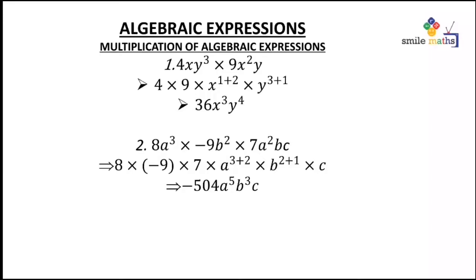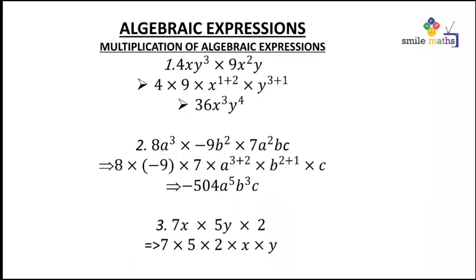So the answer becomes negative 504a⁵b³c. Third example: 7x times 5y times 2. Multiplying the numbers only we have 7 times 5 times 2, then we have x times y, giving us 70xy.